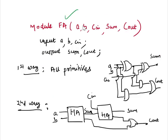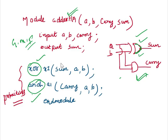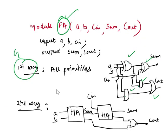This is a full-adder circuit. There are two ways to write Verilog code for a full-adder. The first way is to include all the primitives. This full-adder includes two XOR gates, two AND gates, and one OR gate. So you include two XOR primitives, two AND gate primitives, and one OR primitive — similar to how we wrote the code for the half-adder. This approach is called gate-level modeling technique.